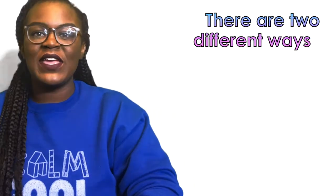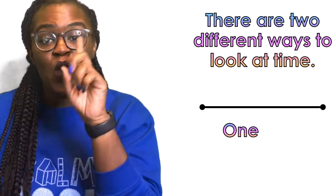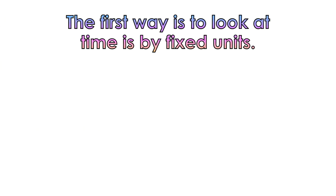So there are two different ways that we can look at time. Let's take this line, for example, and let's assume that this line represents one year. The first way that we look at time is by fixed units. So remember, our one line represents one year.